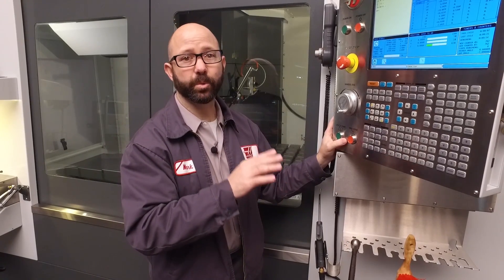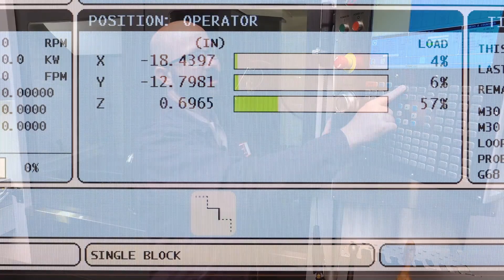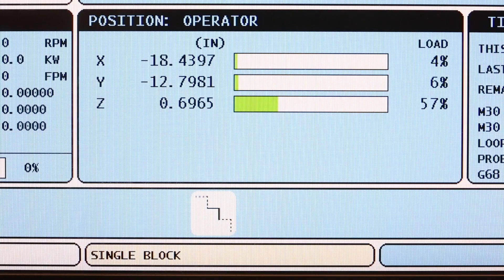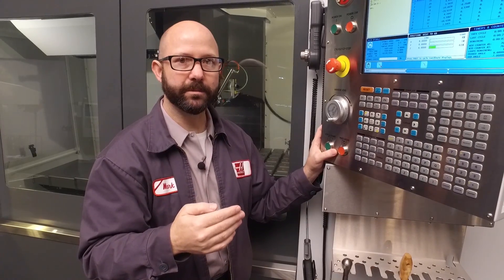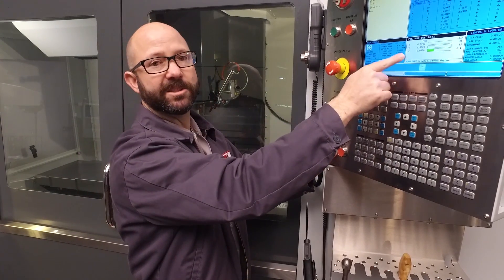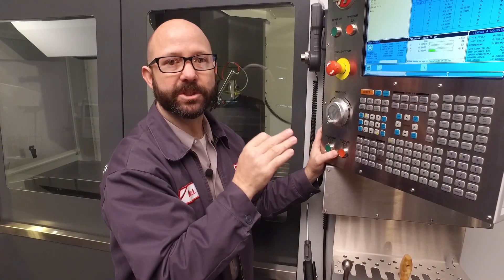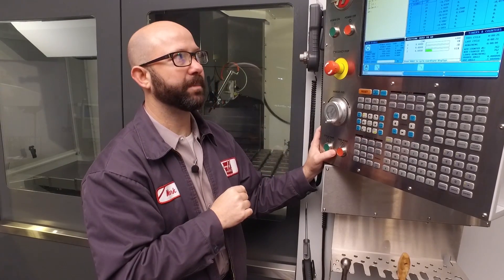At this point, it's really important that I take a look at my position screen and I change it until I can see my distance to go. Now in single block mode, my distance to go is going to tell me exactly where the machine is going to move next when I press the cycle start button.